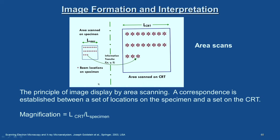We are interested not just in a line scan but in area imaging. This schematic illustrates the principle of area scans. The area is scanned on the specimen — a linear dimension L on the specimen — in synchronization with the area displayed on the CRT. A correspondence is established between a set of locations on the specimen and a set on the CRT.